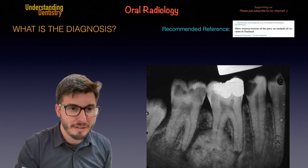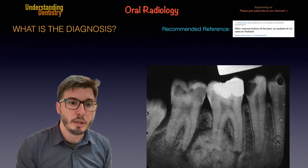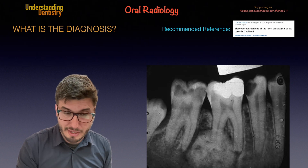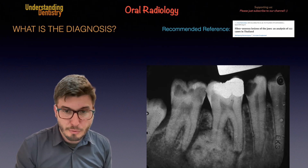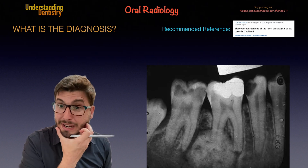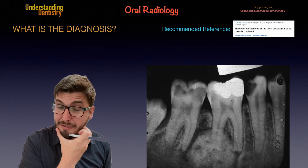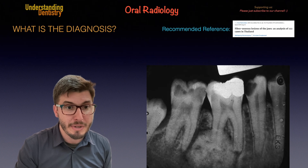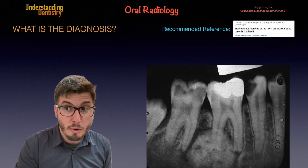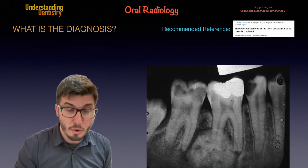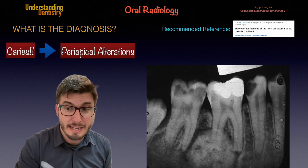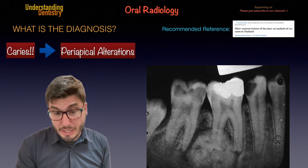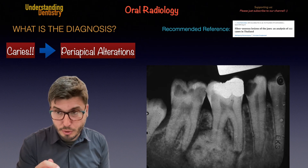Feel free to pause the video and try by yourself to diagnose all the conditions of this radiograph. Let's start without further ado by recognizing that we have a lot of caries. Which are the teeth that are presenting with caries? Well, all of them. So all of them are presenting with caries and this is leading to periapical alterations. So let's understand what's going on here.